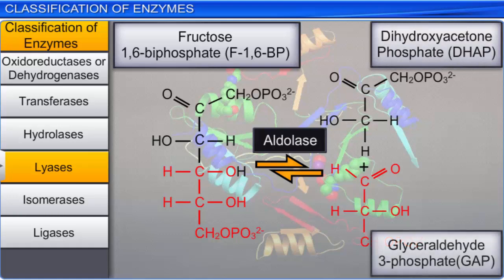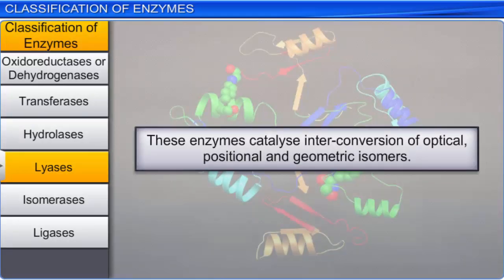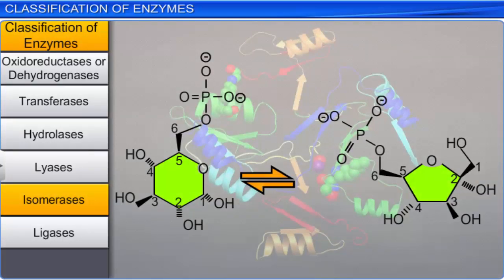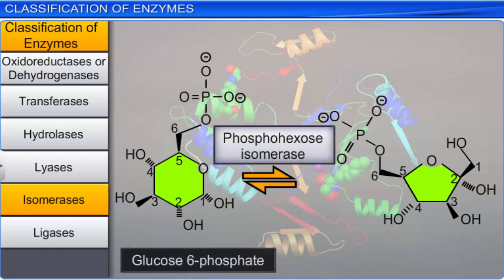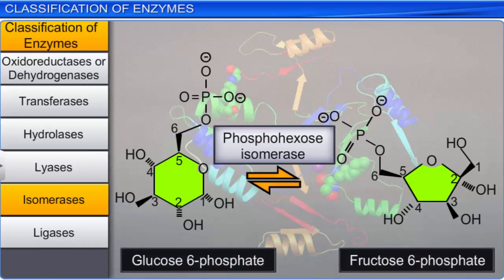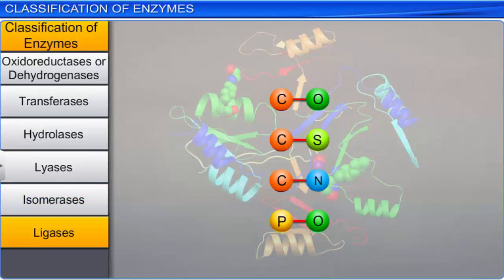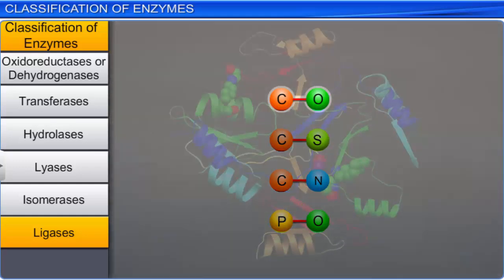The fifth class of enzymes, isomerases, catalyzes the interconversion of optical, positional, and geometric isomers. For example, during glycolysis, phosphohexose isomerase catalyzes the conversion of glucose 6-phosphate to fructose 6-phosphate. Ligases form the sixth class of enzymes — they catalyze the linking together of two compounds, such as joining carbon with oxygen, carbon with sulfur, carbon with nitrogen, and phosphate with oxygen bonds.